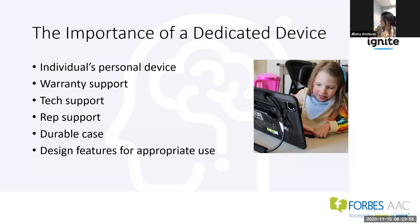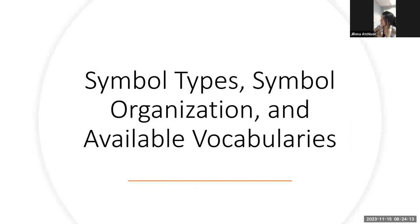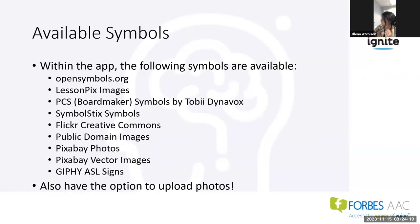The importance of a dedicated device: having a dedicated device, you get a warranty, tech support, rep support, a durable case, and design features appropriate for use. Within the app, the following symbols are available: common SymbolStix, PCS symbols, as well as high contrast symbols. You also have the option to upload any photos you want or search Google Images. If there's a symbol that doesn't really resonate with a client, you can find something that really clicks for them.